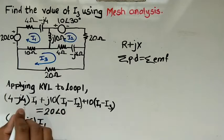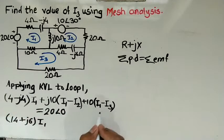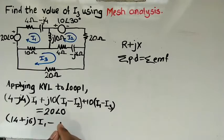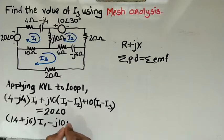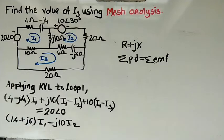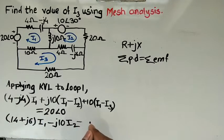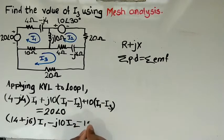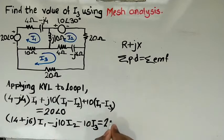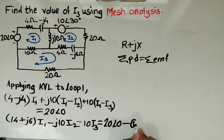...then minus j10·I2, and minus 10·I3, which equals 20∠0°. This is equation number one.